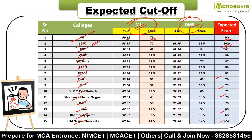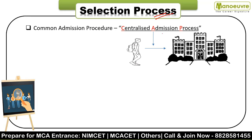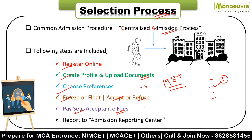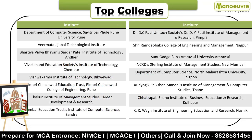Now the selection process - it's a Centralized Admission Process (CAP). First, register online, then create a profile and upload all documents related to your category and qualification details. Then choose preferences - you can select up to 193 plus colleges. Based on that, you freeze your option and accept or refuse the allotment. If you accept, pay the seat acceptance fee of 1,000 rupees and report to the admission reporting center for document verification. Then you get the seat in your desired college.